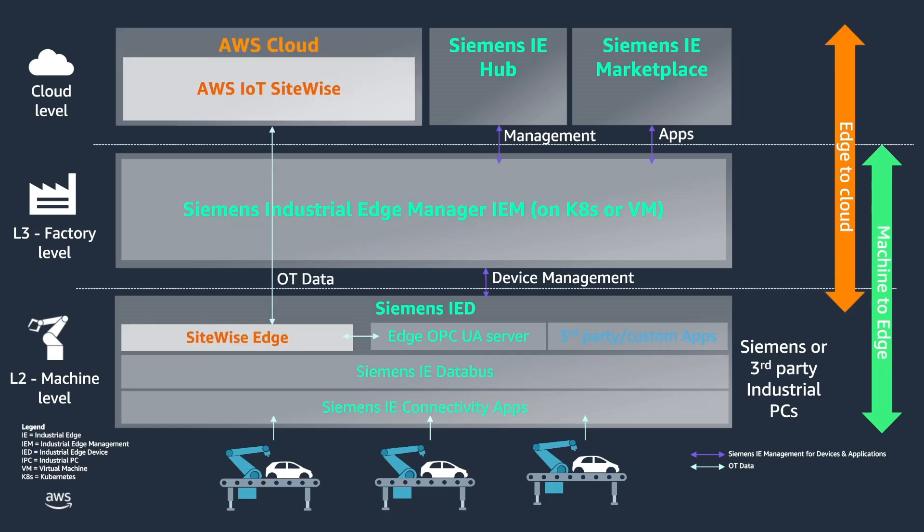With the release of SiteWise Edge into the Siemens App Store, you can now install SiteWise Edge on each of your IEDs, which can then send data up to SiteWise in the cloud. By doing this, you can use your existing machine-to-edge connectivity using Siemens Industrial Edge, and add edge-to-cloud connectivity using the SiteWise Edge gateway.